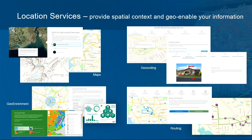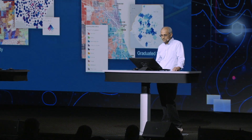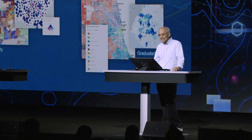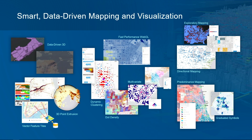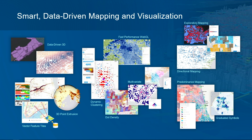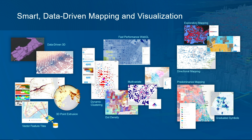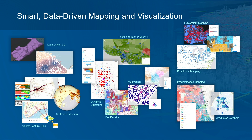It's now time for a rapid tour through the capabilities of ArcGIS. Location services provide spatial context to activities and help customers geo-enable their data. They include a rich set of highly performant maps, as well as geo-coding, routing, and geo-enrichment. Smart data-driven mapping allows users to explore data in order to gain insight, and allows applications to communicate information by depicting data in various ways that reveal the contained information. The mapping section of the plenary will show you this in depth.